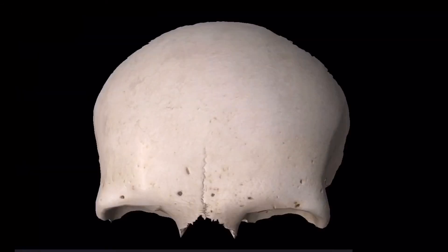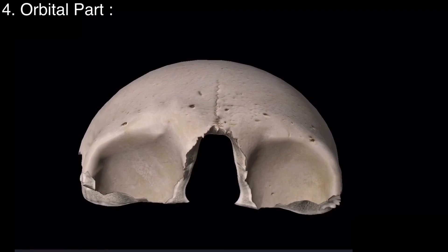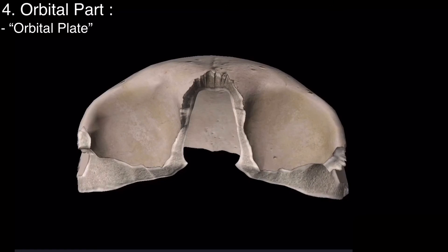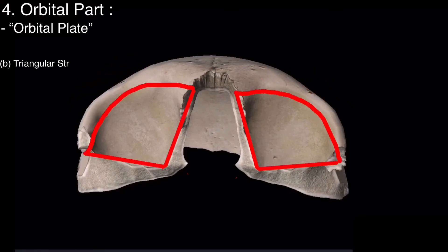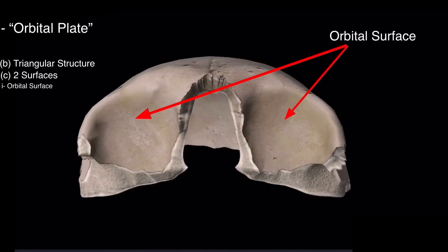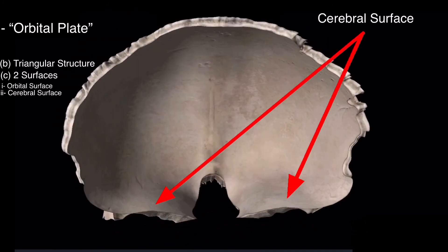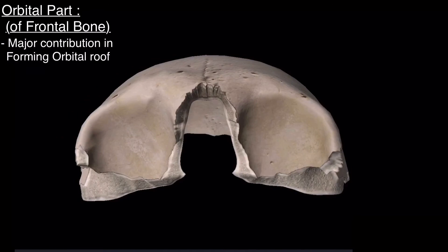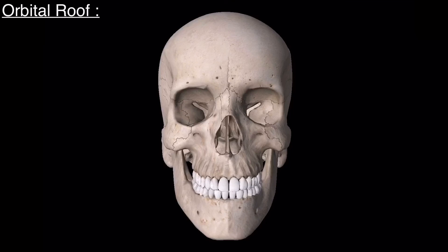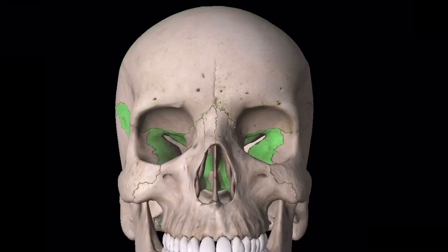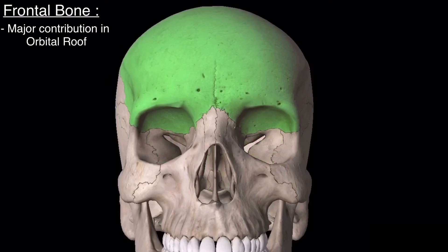Next is the orbital part of the frontal bone. It includes two bony orbital plates that extend from the supraorbital margin and have a triangular structure with two surfaces: the orbital surface and the cerebral surface. The frontal bone has a major contribution in forming the roof of the orbital cavity — the roof is formed by the frontal bone and the sphenoid bone, with the frontal bone contributing the majority.